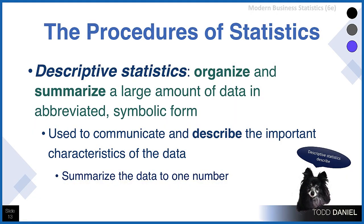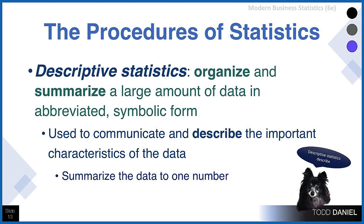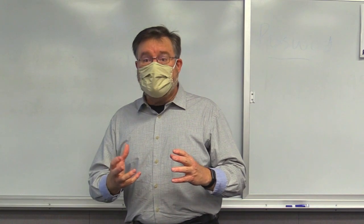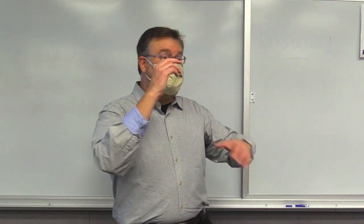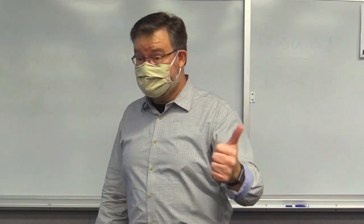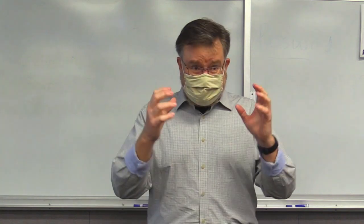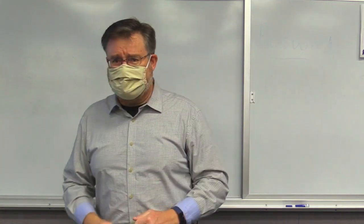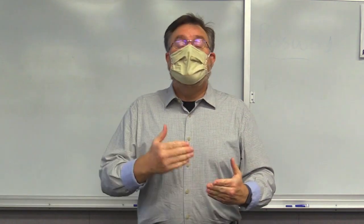The second thing I might mean is the procedure of statistics — the things we actually do in the field. The procedures of statistics are descriptive and inferential. Descriptive statistics organize and summarize a large amount of data in an abbreviated symbolic form. For example, if I wanted to describe the classroom and asked everyone how tall they are, I could then say this class at this time is particularly tall and excellent students — describing based on observed characteristics using descriptive statistics. I can describe numbers using things like a mean, median, or mode, put them into tables, or make charts or graphs.